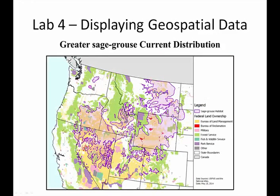Lab 4 covers how to style data layers and compose a map using the QGIS Print Composer to produce a map of Greater Sage Grouse current distribution.